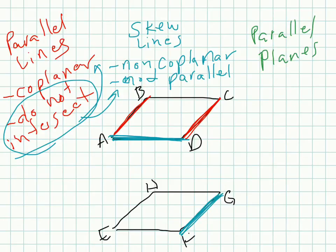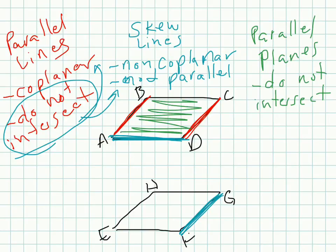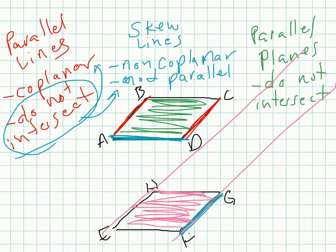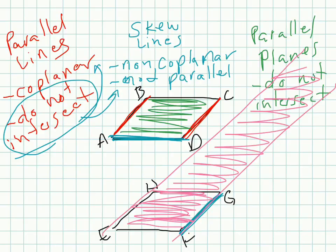Lastly, we have parallel planes. Parallel planes also do not intersect. Let's work with plane ABCD. So here's a plane. Let's say we also have plane EFGH. If these planes were to go on forever, so you have this plane here going on forever, and you also have the plane ABCD that went on forever.